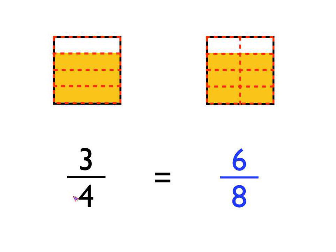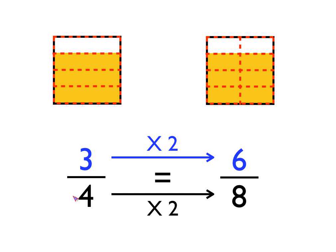Let's look at what we actually did there. I started off with four equally sized pieces in the first square, and then on the square on the right I now have eight equally sized pieces — I've doubled it. I've got twice as many pieces in the second square as in the first. And consequently, twice as many of them are shaded in. So if I times the bottom number by two, I also times the top number by two. Three times two is six, and four times two is eight.